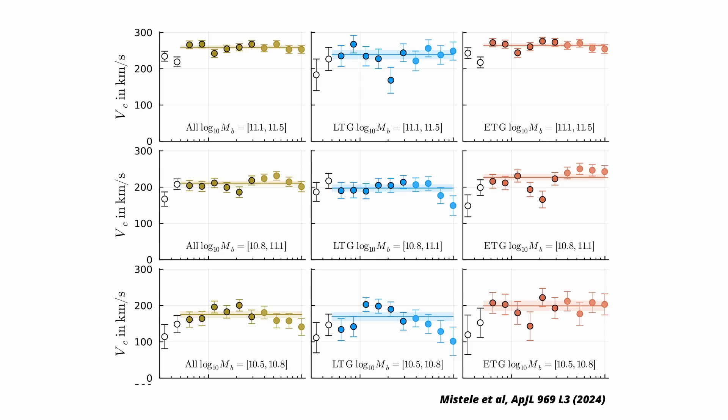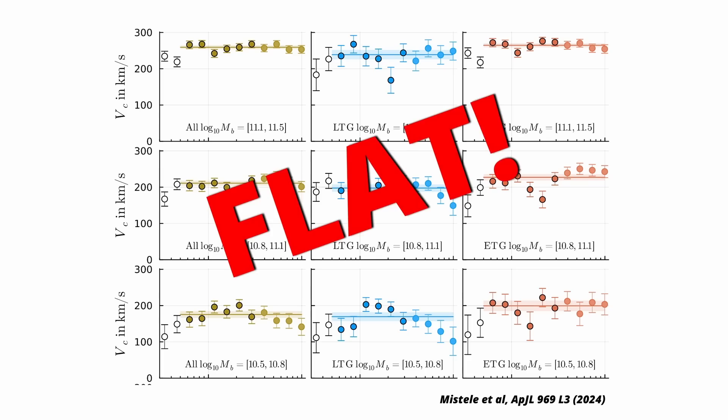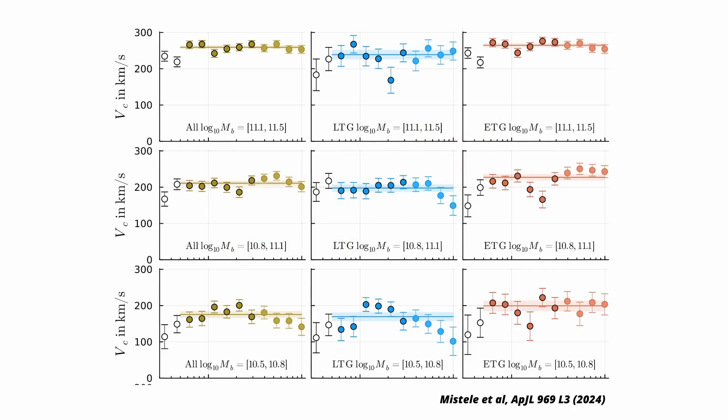And the kicker is, it remains flat way, way outside of galaxies, up to a million light years in some cases. Just for reference, the visible part of the Milky Way is about a tenth of this. This is super interesting because the dark matter halos should have faded out by then.